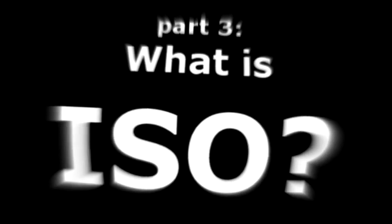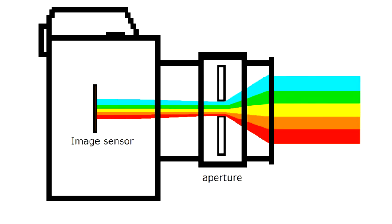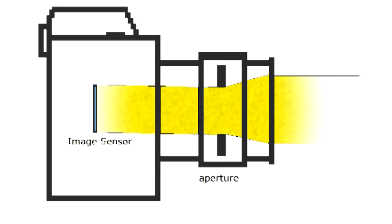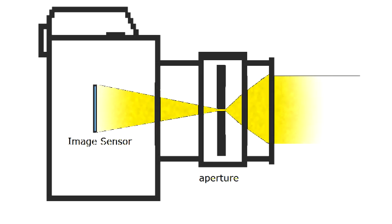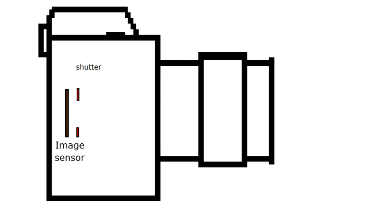Photography is all about capturing light. Light bounces off of objects, passes through the lens of your camera, and hits the film or image sensor, creating an image. The aperture controls how much light gets through the lens, the shutter controls how long the sensor is exposed to light, and the ISO controls how sensitive to light the image sensor is.